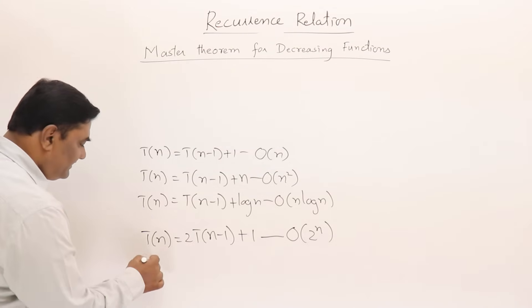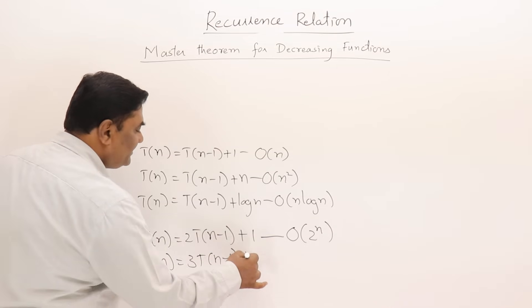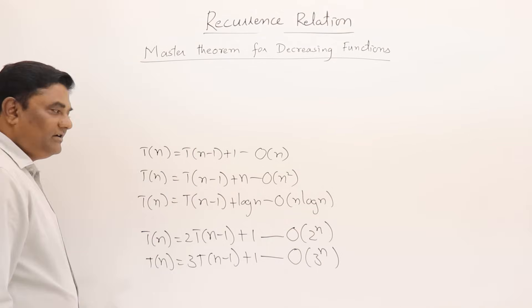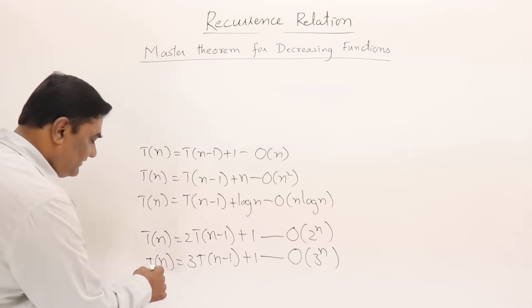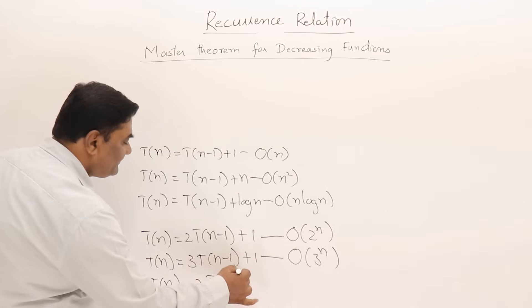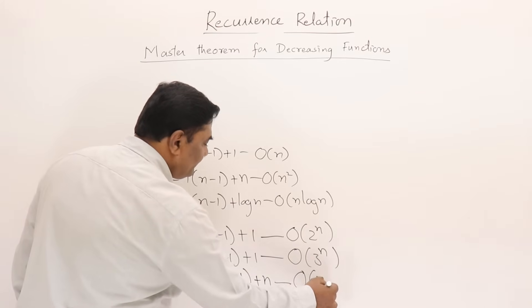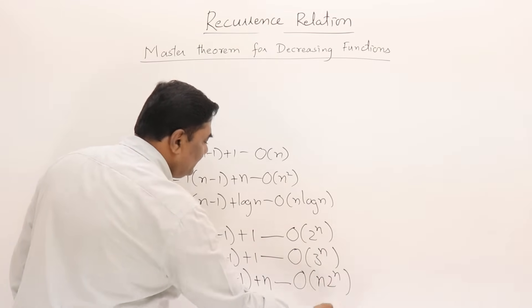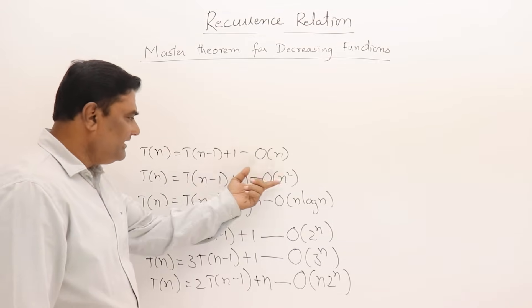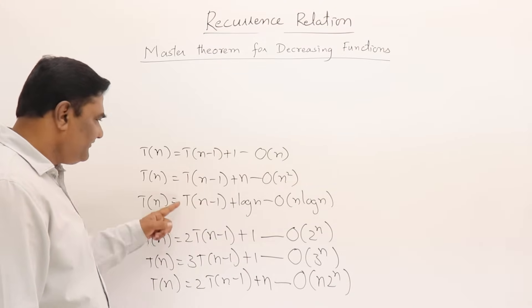T(n) = 3T(n-1) + 1 will be O(3^n). And if we have T(n) = 2T(n-1) + n, this will be O(n · 2^n). Every time, whatever we had was getting multiplied by n. Here, whatever you have will be multiplied by 2^n because the coefficient 2 is there.